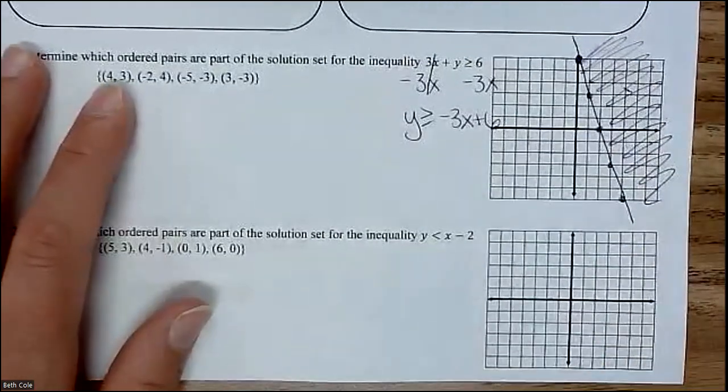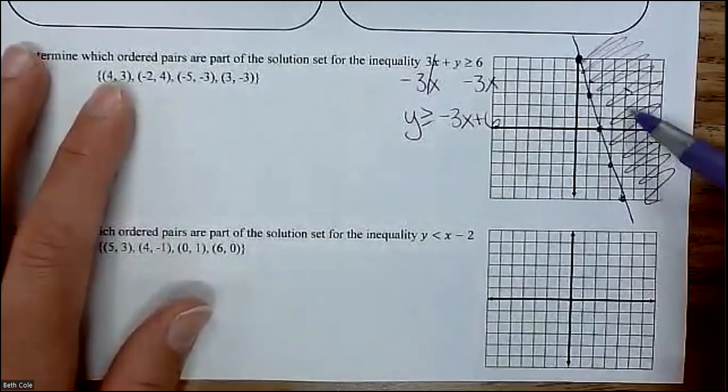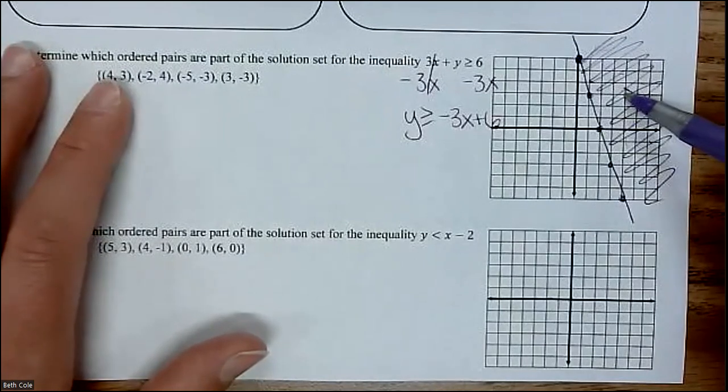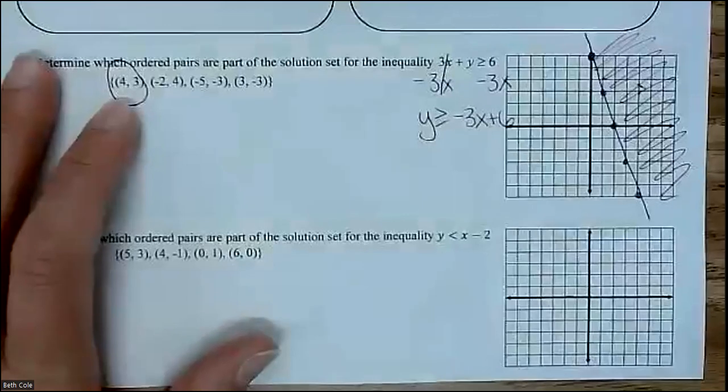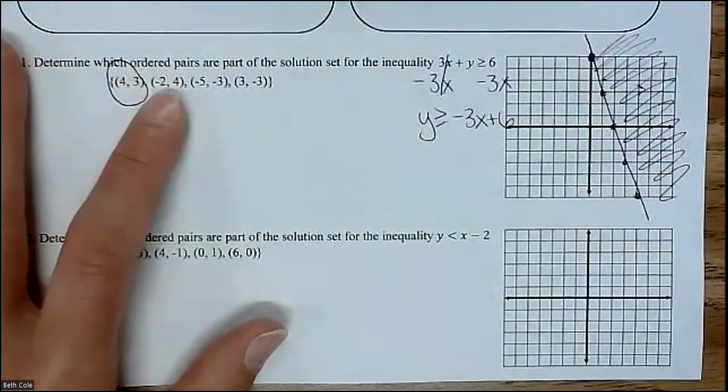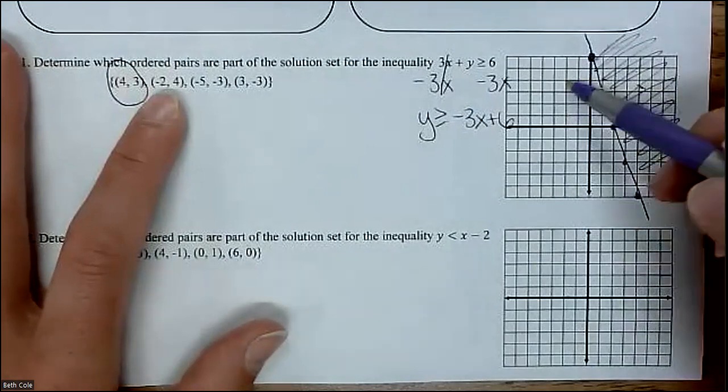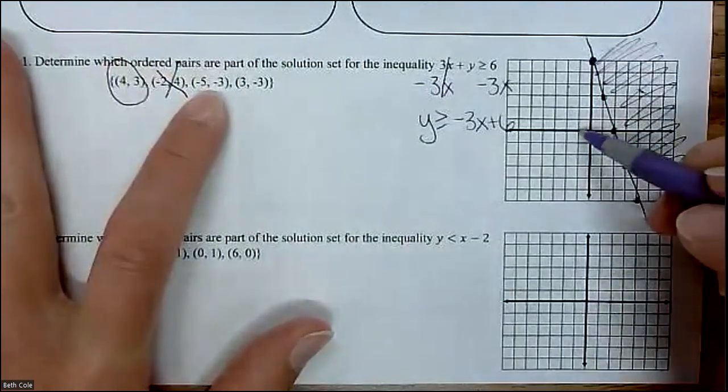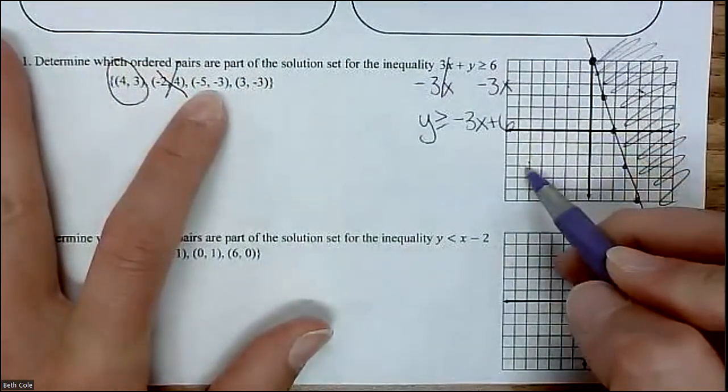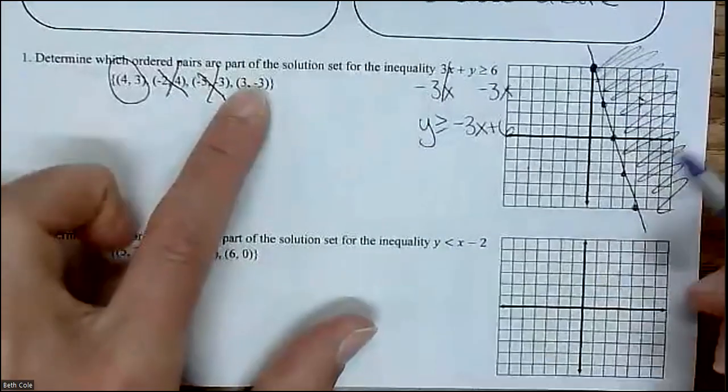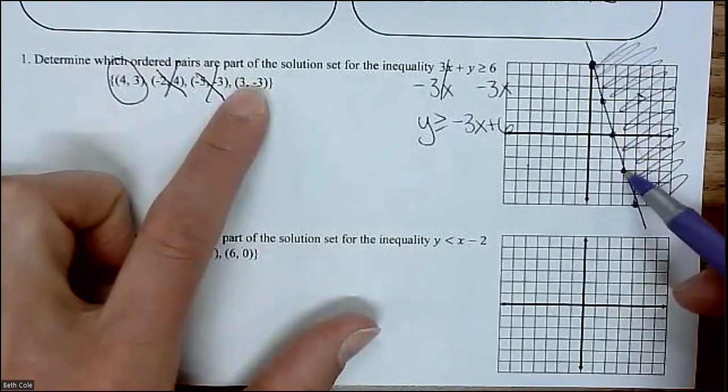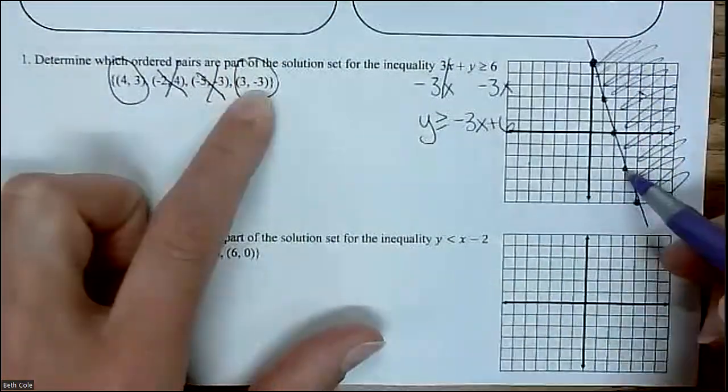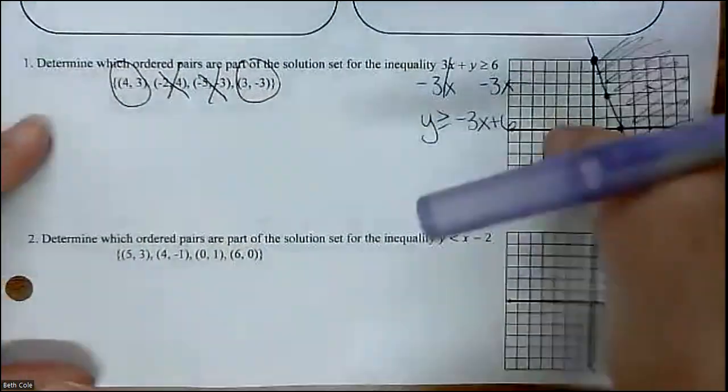What that means is all these points are part of the answer. All of these points are not part of the answer. And so that's what we're going to do is look at these right here. So 4, 3. Find 4, 3, that would be right here. Is that part of the solution? Yes or no? Yes. Do you see how it's part of the shaded part? So yes. We want that one. How about negative 2, 4? No. Do you see how that would be right here? No. We don't want that one. How about negative 5, negative 3? It would be right here. So no. And then 3, negative 3. 3, negative 3 is this point. It's on the line. Why would it be a yes in this case? It's a part of it. Good. It's a solid line.